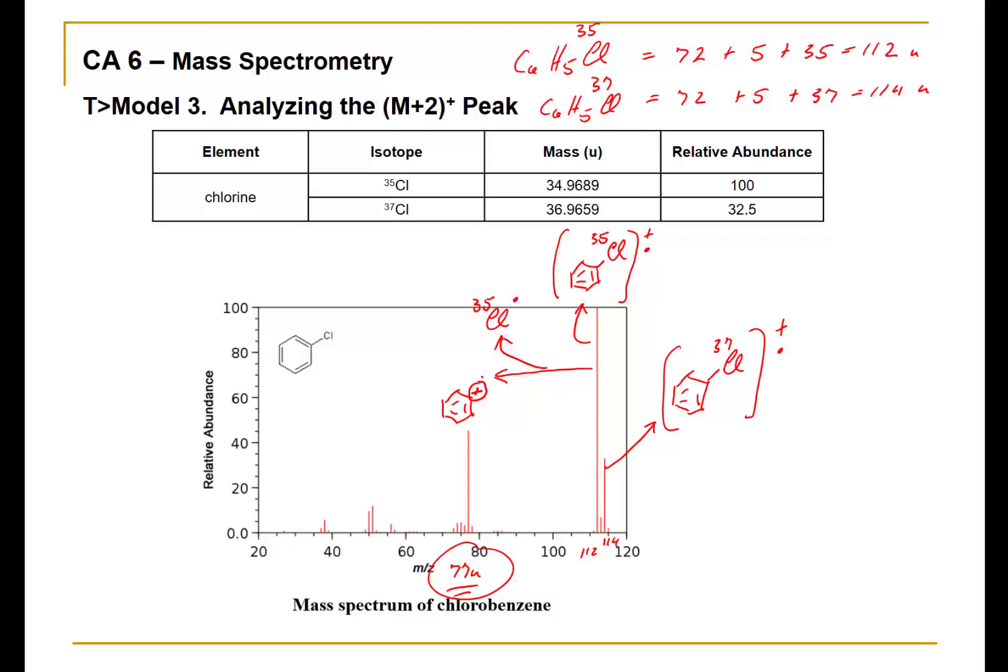It's also possible that this peak came from the higher mass peak: instead of losing chlorine-35, what was lost was Cl37. Both of these events would have resulted in that carbocation being detected at 77 atomic mass units.